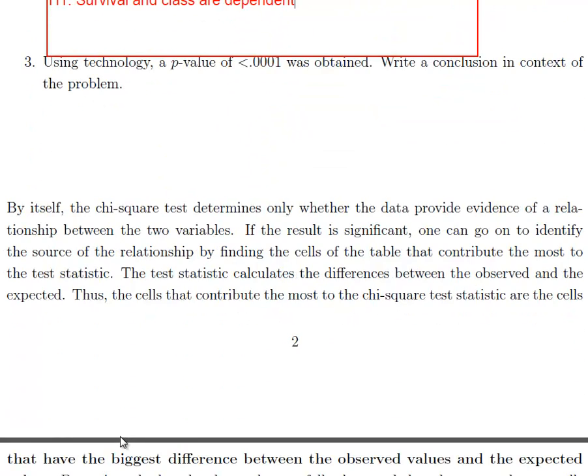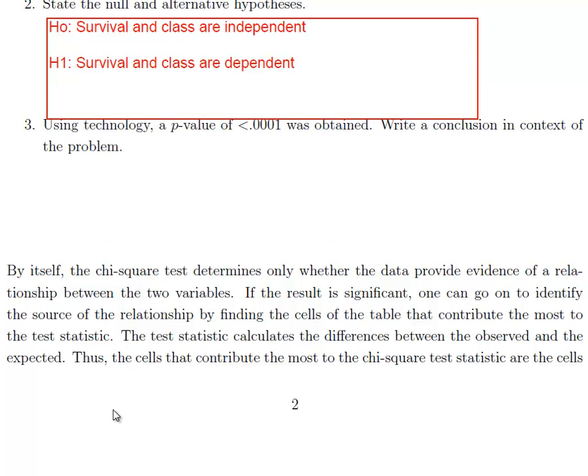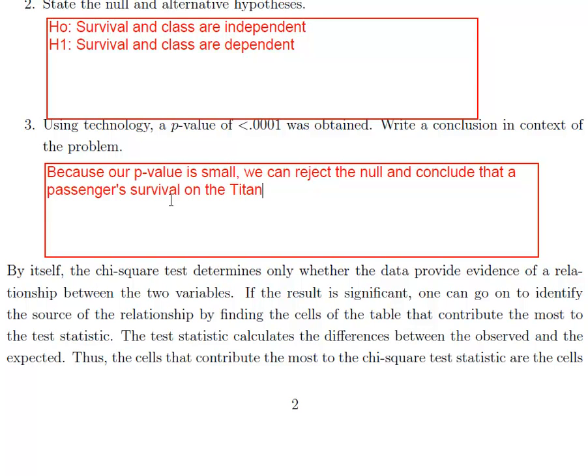We're going to rely quite a bit on technology for the chi-square test of independence. I'm just going to tell you what the p-value is. On the next video you'll actually see how we do this in StatCrunch. But the p-value turned out to be very small. So the same thing applies here. A small p-value certainly less than 0.05 means that we can reject H naught and conclude that the alternative hypothesis is true. So because our p-value is small we can reject the null and conclude that a passenger's survival on the Titanic depends on their ticket class.